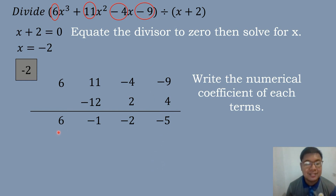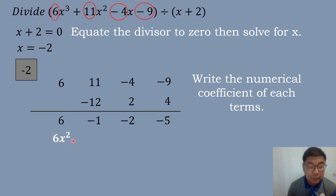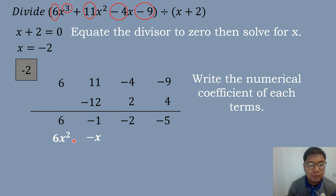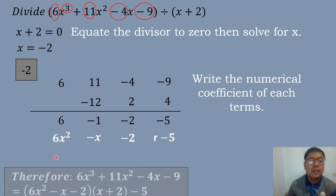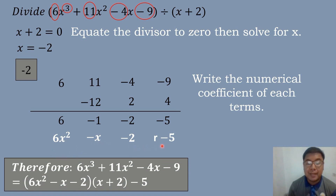Now to get the quotient, we write 6 as our numerical coefficient followed by X, and we subtract the highest degree of the dividend polynomial which is 3 by 1. So 3 minus 1 equals 2, giving us 6X to the second power. So 6X squared is the leading term of our quotient, followed by negative 1X to the first power, then negative 2 as the constant term, and negative 5 is the remainder. The quotient is 6X squared minus X minus 2, remainder negative 5.